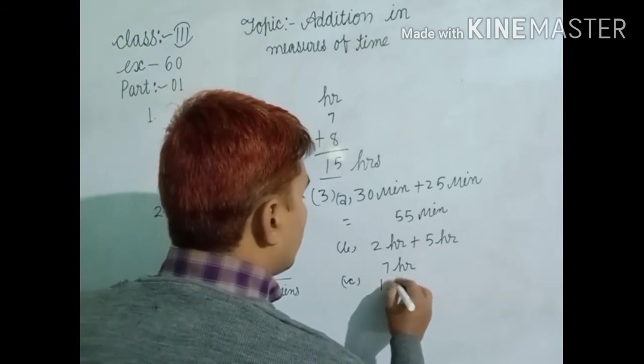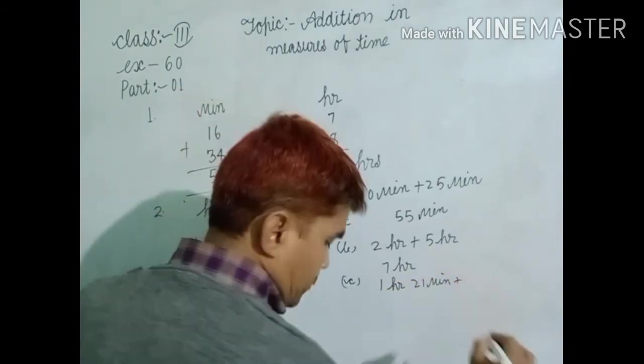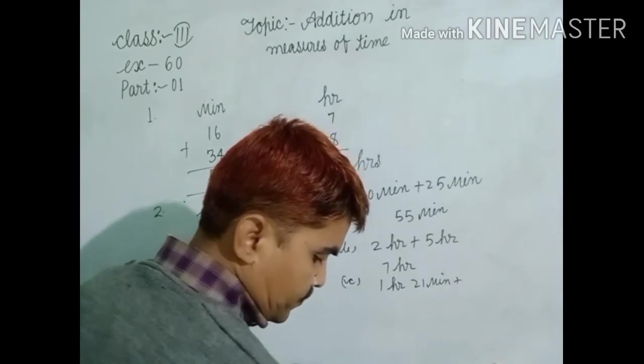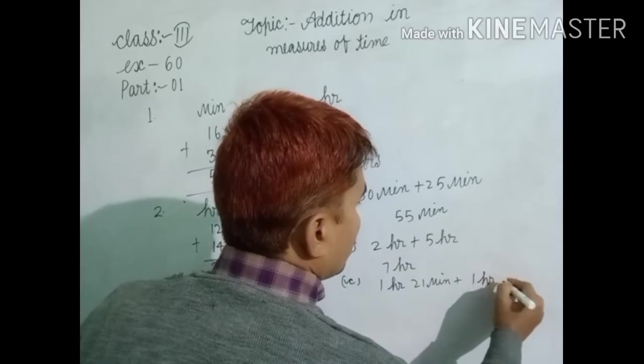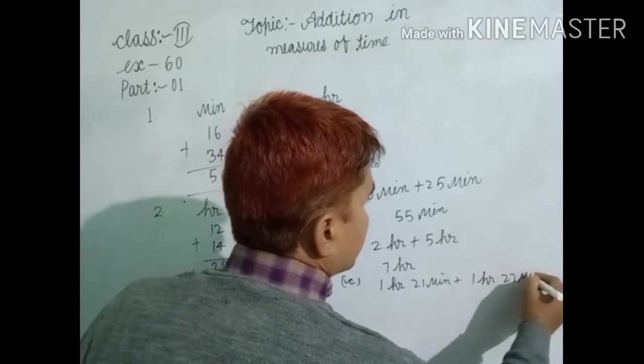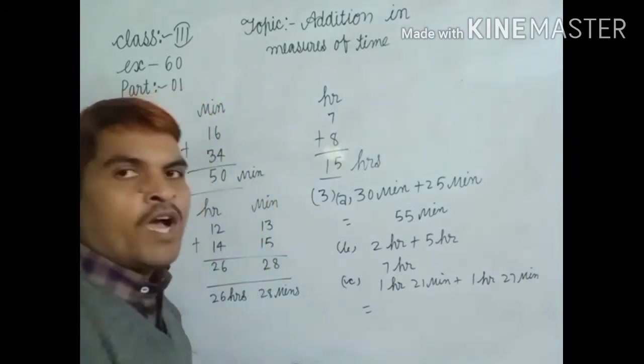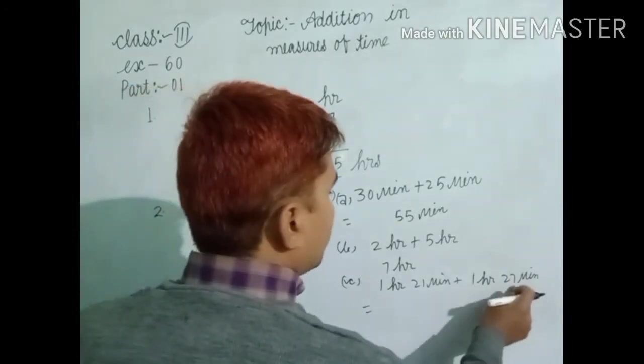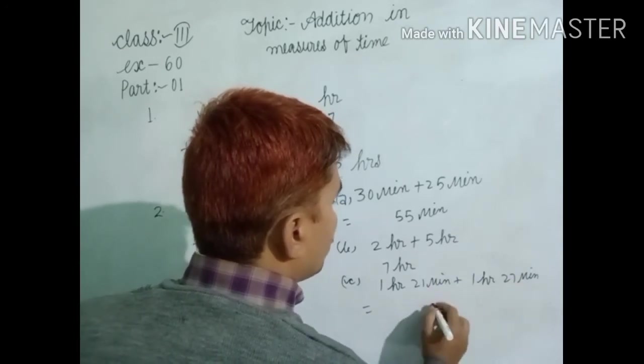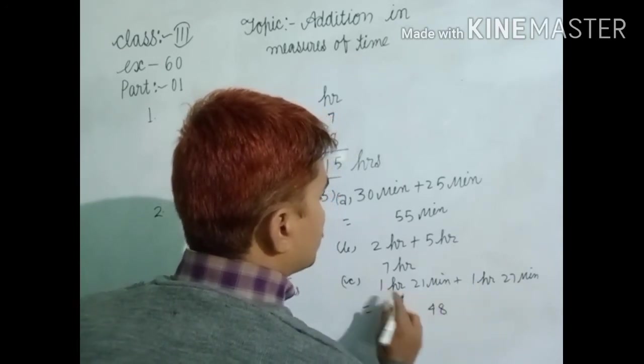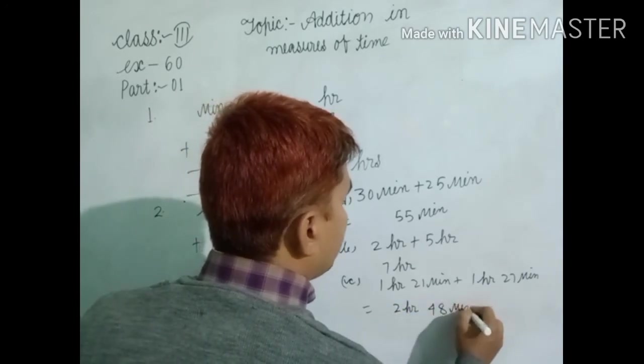And see, 1 hour 21 minutes plus 1 hour 27 minutes. How to add minutes? First of all, you add minute terms. 7 plus 1, 8. 2 plus 2, 4. 1 plus 1, 2. Here, write down hour and here write down minute.